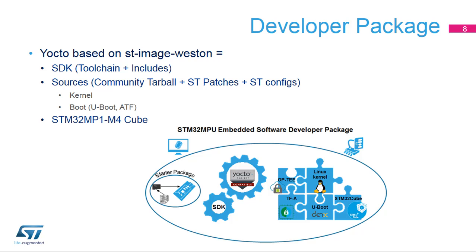The developer package provides, on top of the starter package, a software development kit (SDK) for cross-development on a host PC. It includes the following pieces of software in source code: U-Boot, Trusted Firmware-A (TFA), Linux kernel, and optionally OP-TEE (open-source trusted execution environment). It also includes the STM32MPU package in source code, and if the platform includes an ARM Cortex-M processor, an initialization code generator — STM32CubeMX — which can generate device trees for OpenST Linux and peripheral initialization C code and IDE project files for the STM32CubeMPU package.